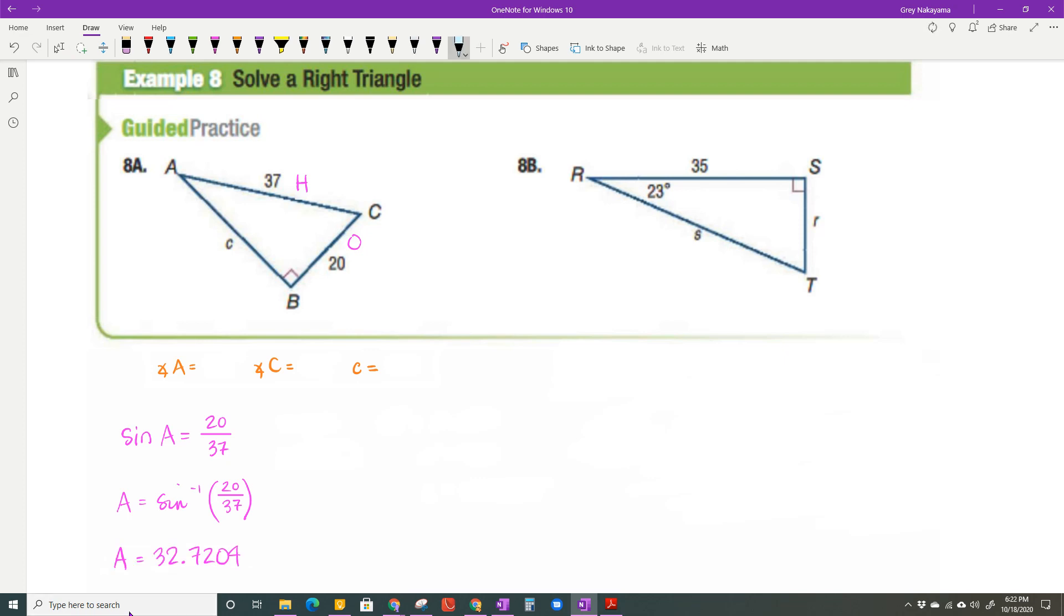Just like we've done before, we're going to round our angles to the nearest degree. That means A is 33 degrees. Angle C is just 90 minus 33, which is 57 degrees. For side c, there's more than one way to do it. One thing I want you to remember is you should always use the numbers in the problem and not necessarily one that you found, because it's just going to be more accurate.